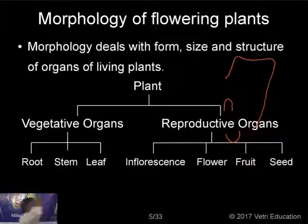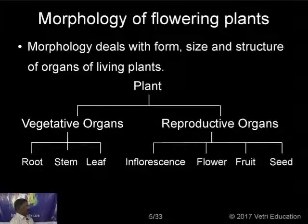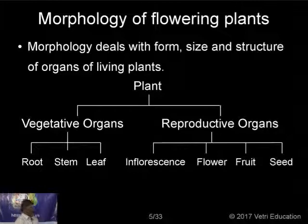What is morphology? Morphology is the study of the form, size, and structure of organs of living plants — essentially the external characters. While studying the external characters of a plant, they are mainly divided into two branches: vegetative organs and reproductive organs. Vegetative organs include root, stem, and leaves. Reproductive organs include inflorescence, flower, fruit, and seeds.